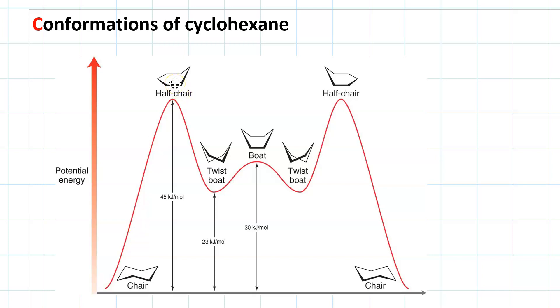First, we go through a half-chair, where we have four eclipsing interactions.